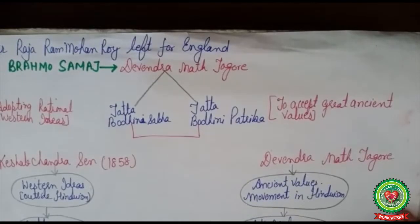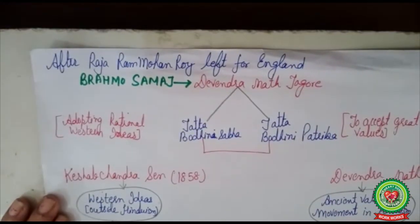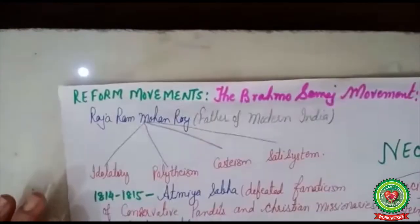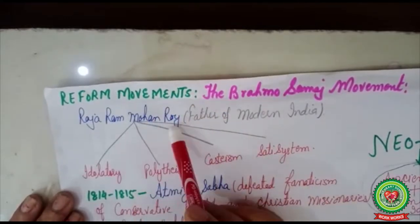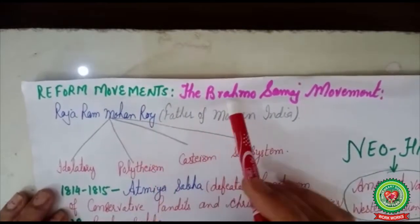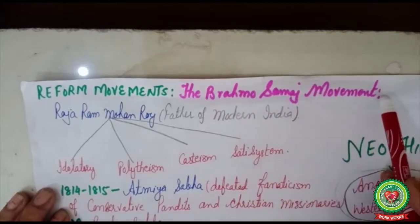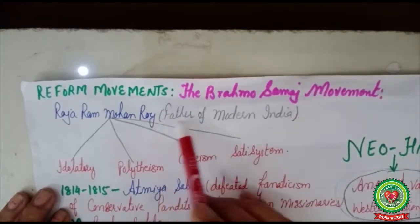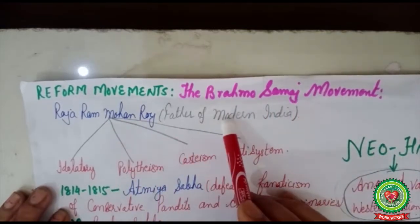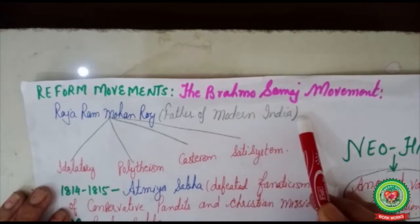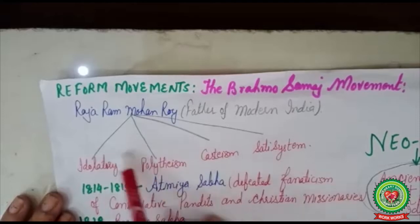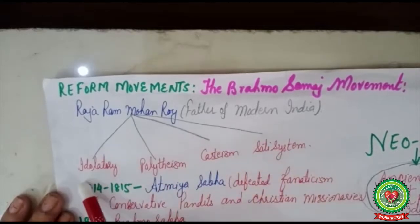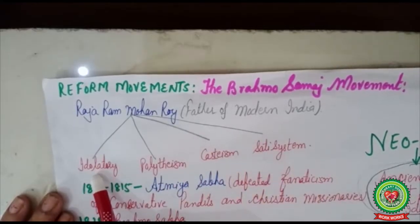Inspired by this western policy of utilitarianism, in India there was a reform movement led by Raja Ram Mohan Roy. This movement was called the Brahmo Samaj movement. Raja Ram Mohan Roy was famously called the Father of Modern India or the Father of Indian Renaissance, due to his introduction of new ideas and his removal of superstitions from Hindu society.